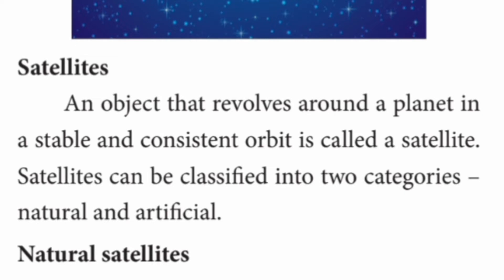An object that revolves around a planet in a stable and consistent orbit is called a satellite. Satellites can be classified into two categories: natural and artificial.